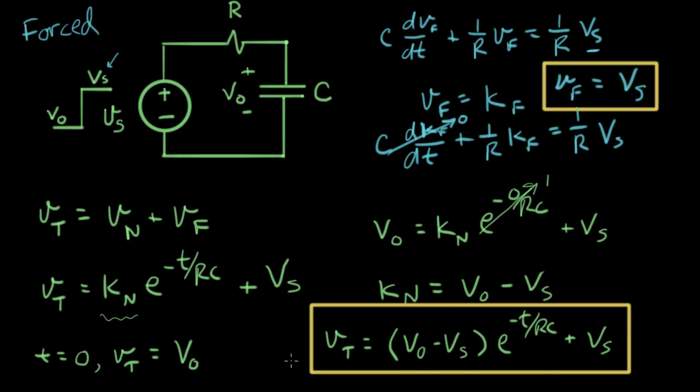And we solved that in two steps. First we did the natural, and then we did the forced. And we added them together and worked out the last constant, whatever the constant was, and there's our answer. So, in the next video, we'll do an explicit example with values for R and C in the step, and we'll see what it actually looks like.